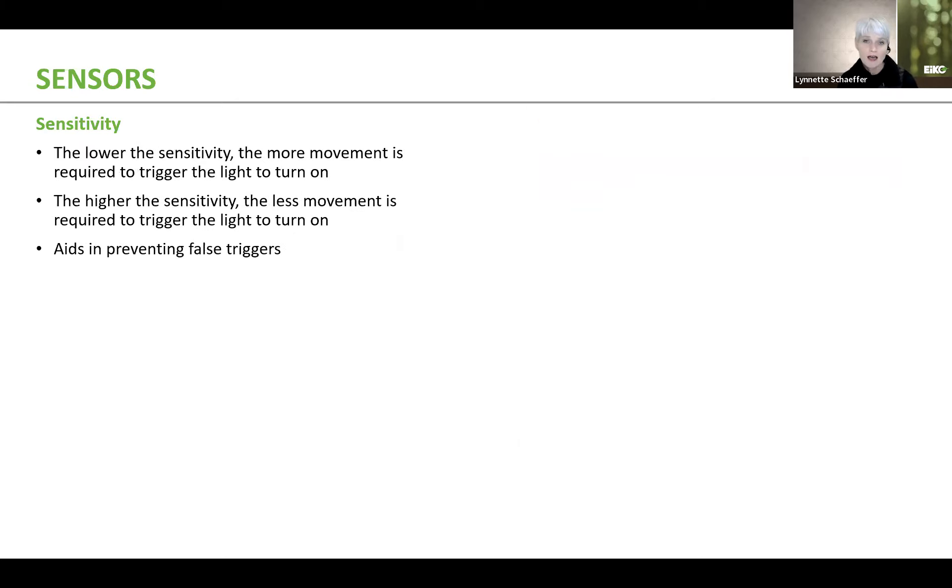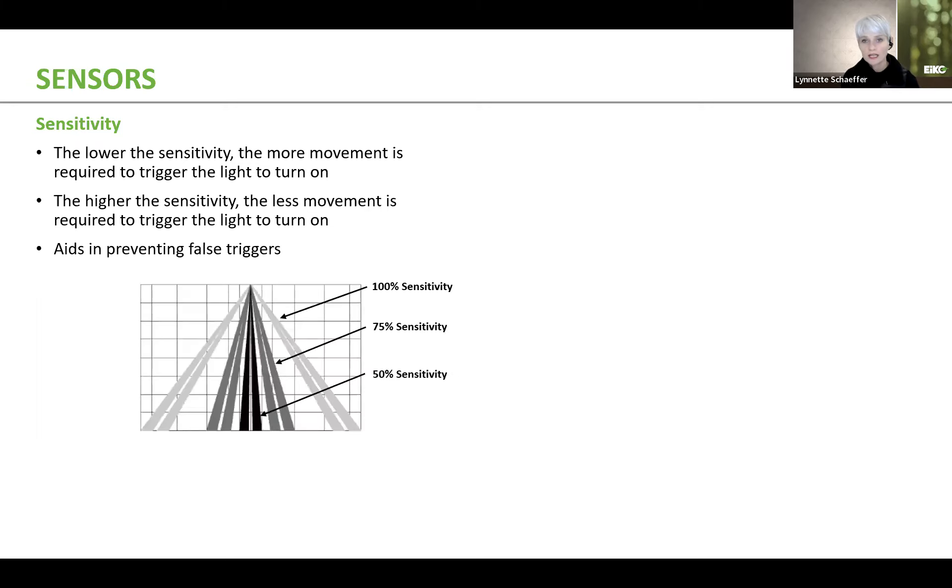Also, as I mentioned, some sensors have the ability to set sensitivity. And this is important because it aids in preventing false triggers. Now, as you watch this animation, you will see that the light fixture will turn on depending upon the sensitivity, how the sensitivity is set for the sensor. So at 100%, the fixture will turn on fairly quickly. At 75% sensitivity, it takes a little bit longer, you got to get a little closer to the fixture. And at 50%, it takes even longer for the fixtures to turn on. You almost nearly need to be underneath the fixture for it to turn on. The reason that people like to be able to set the sensitivity is because it aids in preventing false triggers.